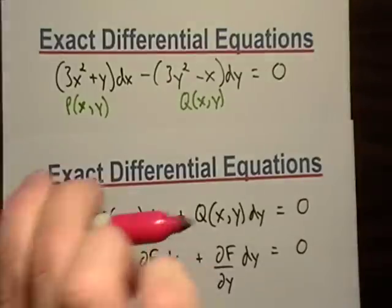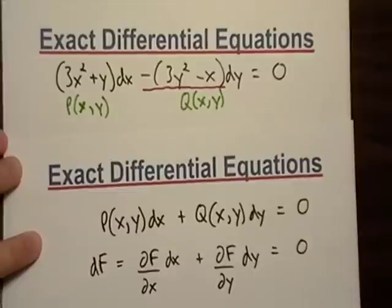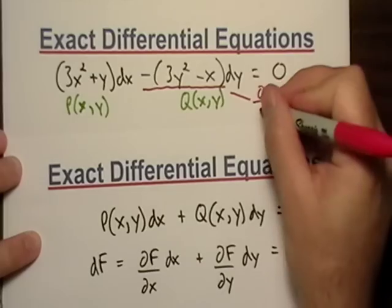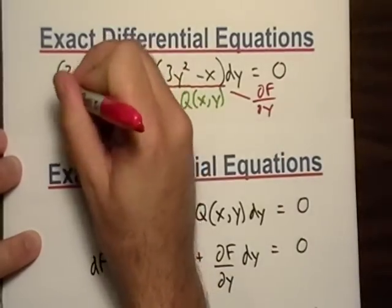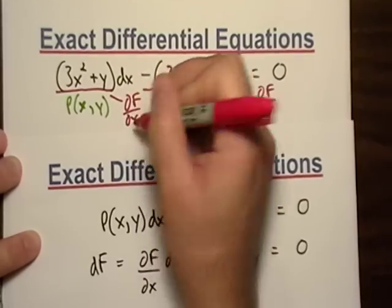And, at the same time, this whole thing right here, based on the differential form, this is partial of F with respect to y. And, this part right here, well, that's partial of F over x.